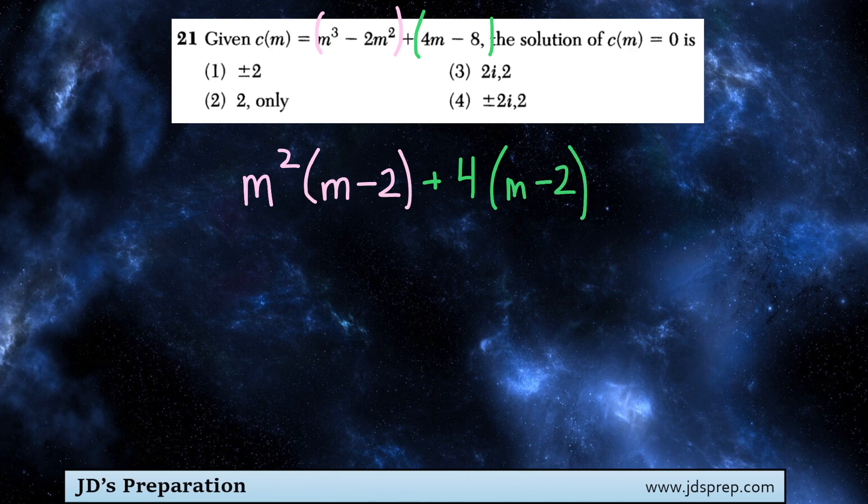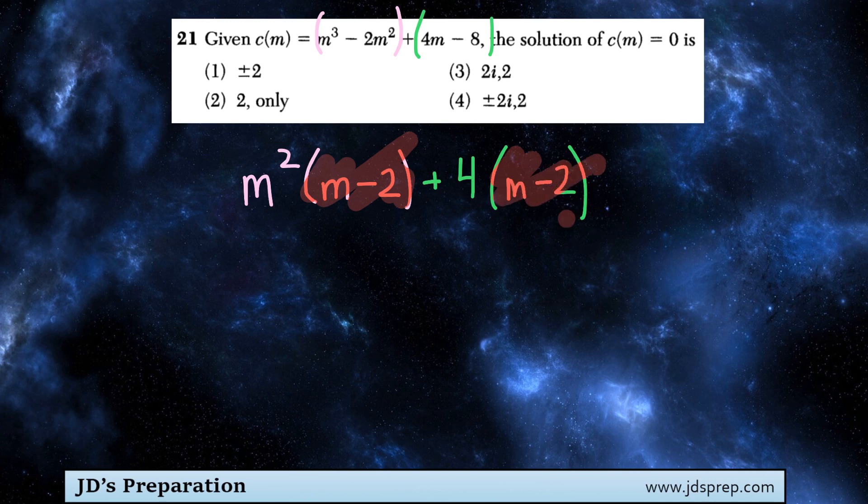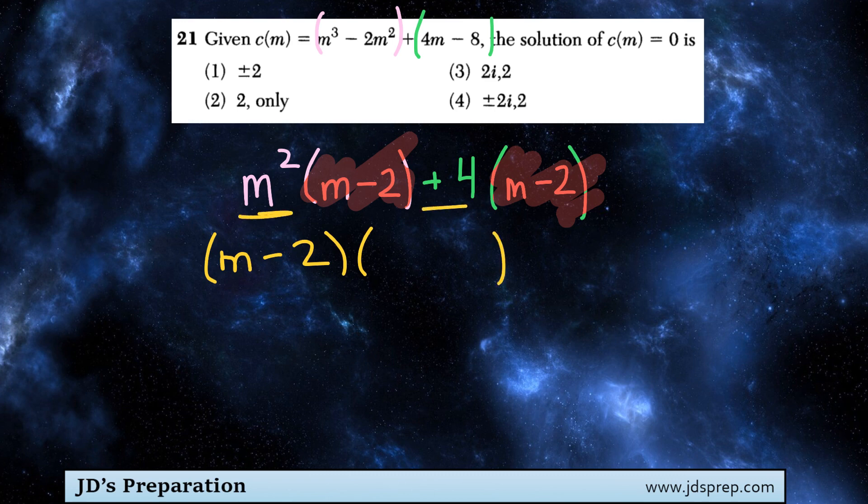Conveniently, you can see now that we have an m minus 2 in both of these terms. So since they share both of those as a common factor, we can factor it out, m minus 2. And then in the other set of brackets, we write what we're left with, which is m squared plus 4.